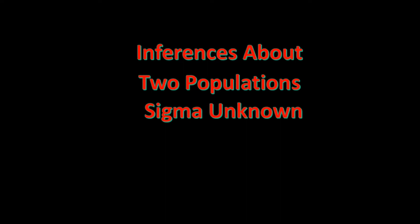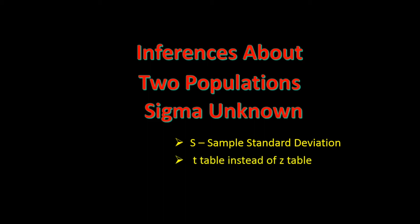Welcome to this tutorial on drawing inferences about two population means in the case where sigma is unknown. When we say sigma is unknown, we mean we do not have the population standard deviation or any historical data to determine it, but rather we are computing the standard deviation from the given sample data. Since we are using the sample, we will use s and not sigma, and we will use a t-table instead of a z-table.